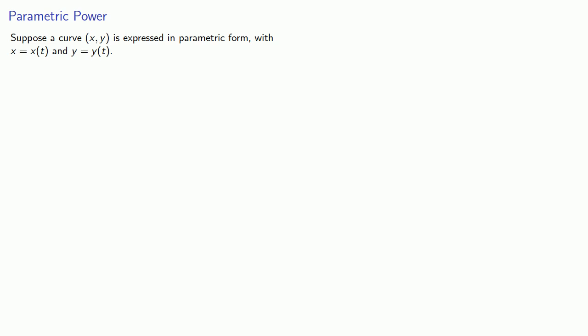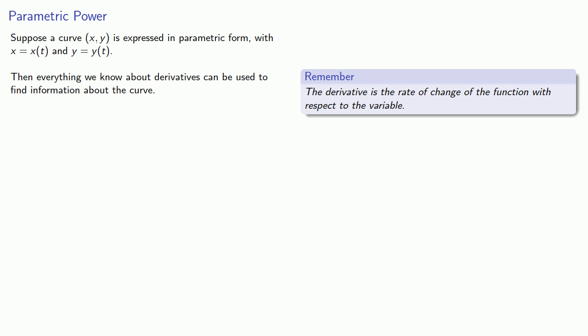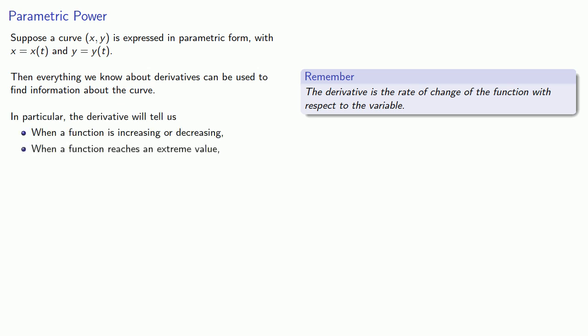Suppose a curve x, y is expressed in parametric form with x and y both being functions of t. Then everything we know about derivatives can be used to find information about the curve. For this, it's helpful to remember one important thing about the derivative: the derivative is the rate of change of the function with respect to the variable, and in particular the derivative will tell us when a function is increasing or decreasing and when a function reaches an extreme value.